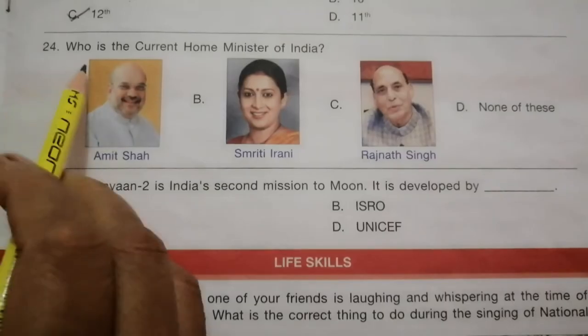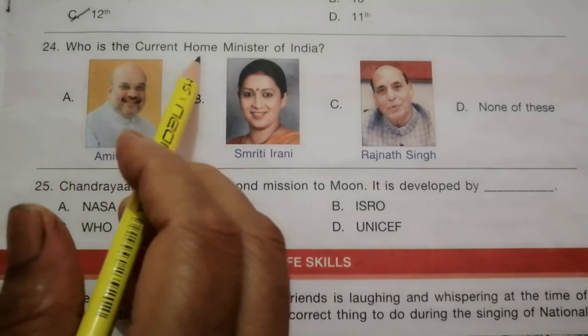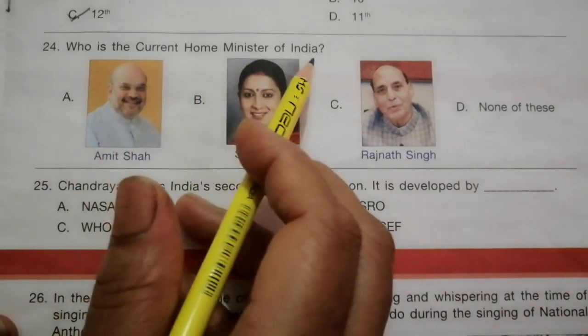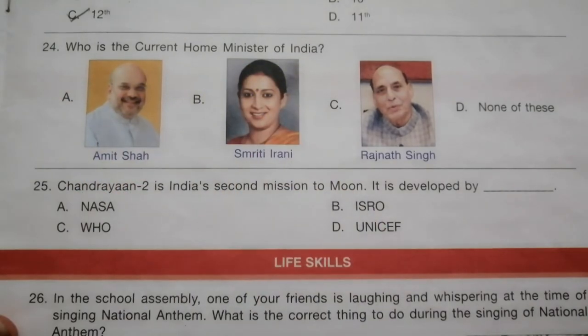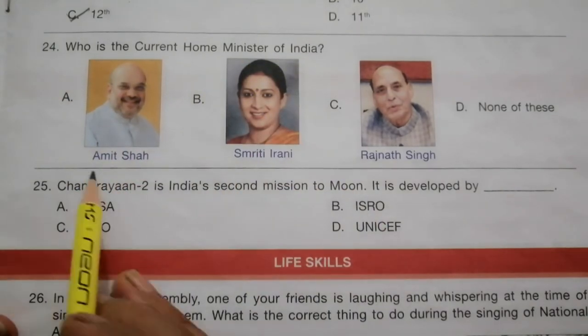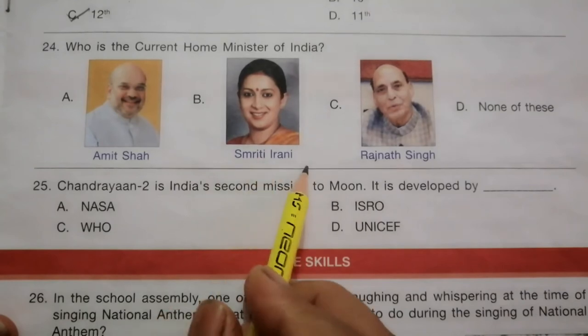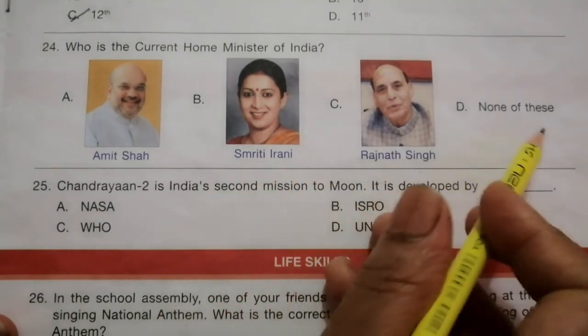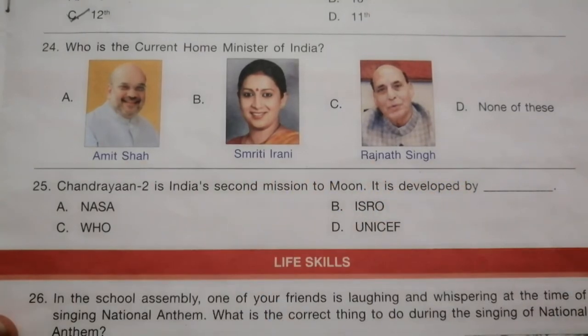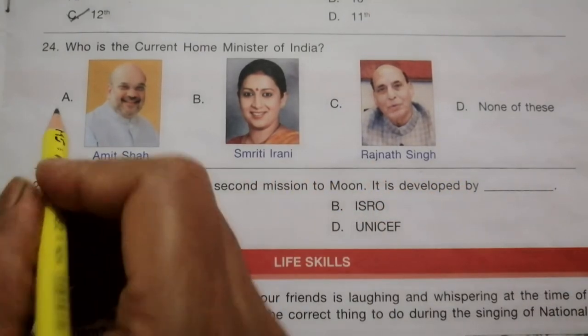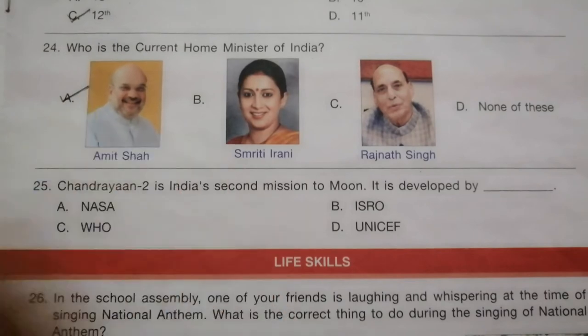Question 24: Who is the current Home Minister of India? The options are Amit Shah, Smriti Irani, Rajnath Singh, and None of these. The answer is A, Amit Shah.